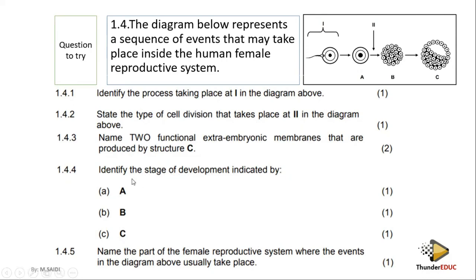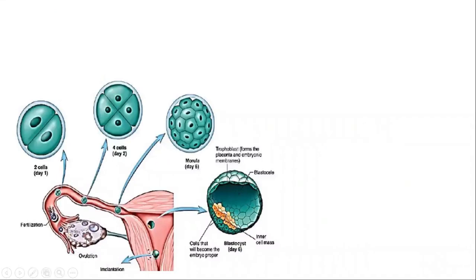Identify the stages of development: stage A is the zygote, stage B is the morula, and stage C is the blastula. Name the part of the female reproductive system where these events take place — the fallopian tube. Fertilization occurs in the fallopian tube, and then development proceeds until implantation, which occurs in the uterus. Within a maximum of one week this entire process has taken place.